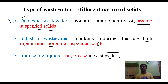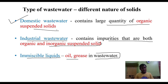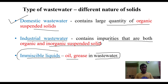Domestic wastewater contains large amounts of organic suspended solids such as bacteria, algal cells, and different types of cells. Industrial wastewater contains both organic and inorganic impurities, and immiscible liquids like oil and grease, which are lighter than water and float on the surface.